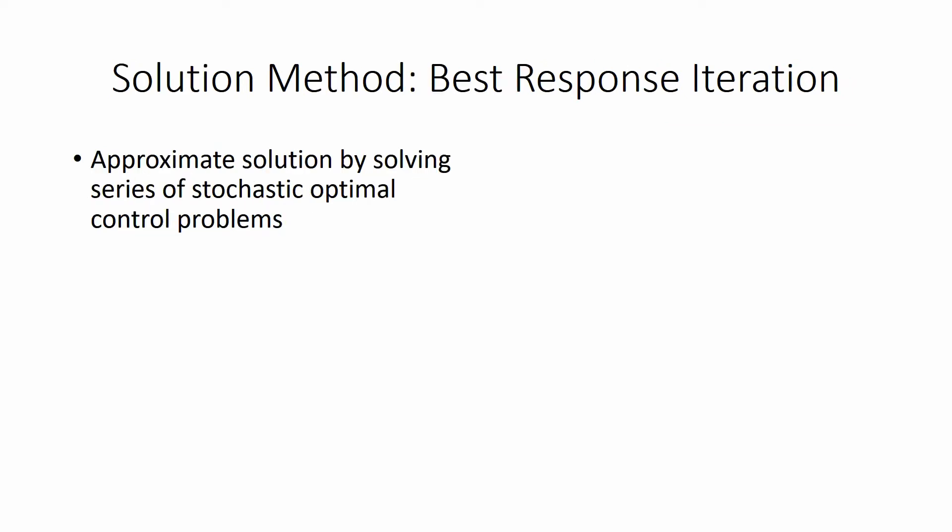General stochastic differential games are difficult to solve, so we utilize an approximate numerical method known as best response iteration. This method works by solving a series of stochastic optimal control problems, which creates an iterative system that has Nash equilibrium as fixed points.